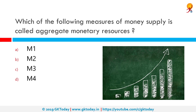Which of the following measures of money supply is called aggregate monetary resource? The correct answer is M3. A monetary aggregate is a formal way of accounting for money such as cash or money market funds.